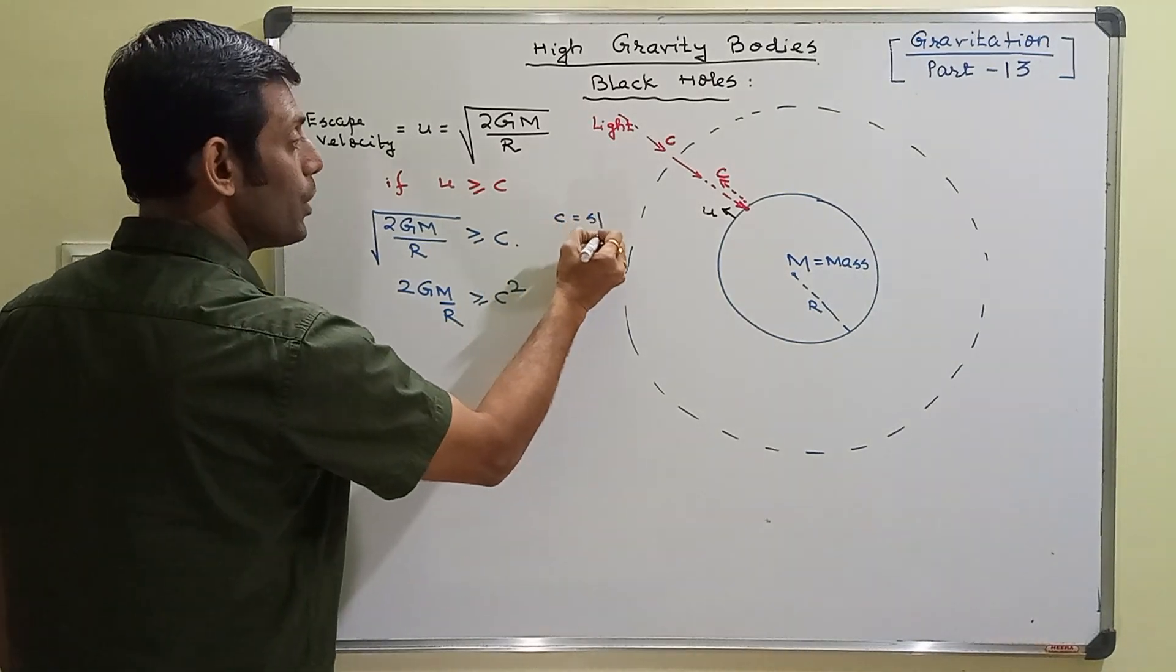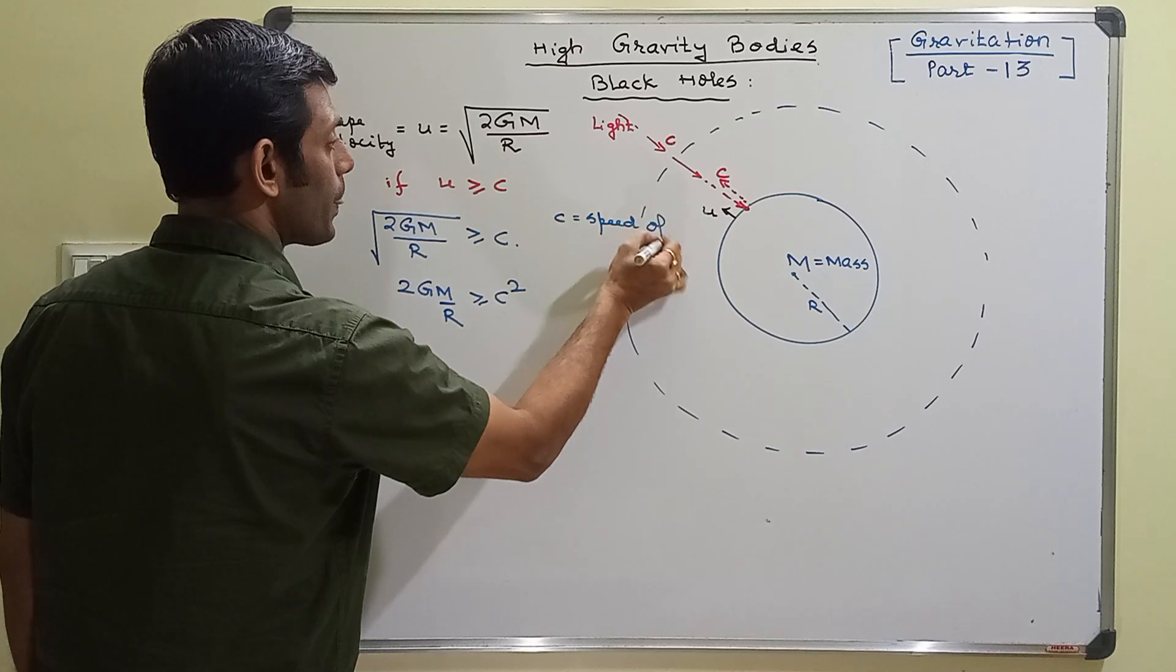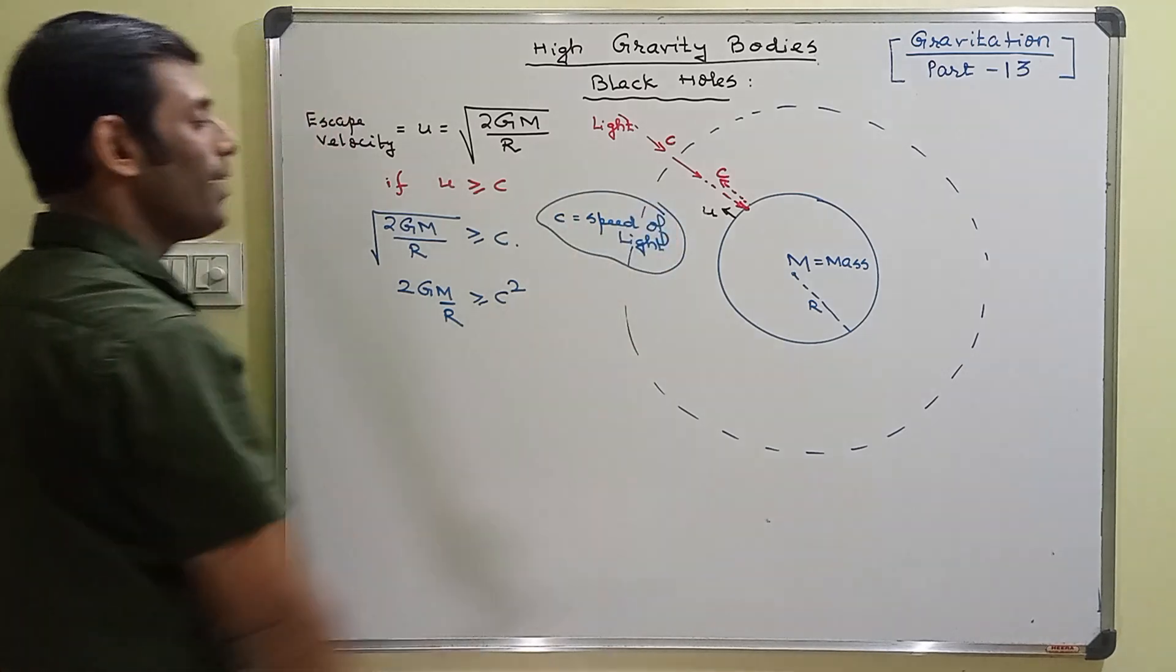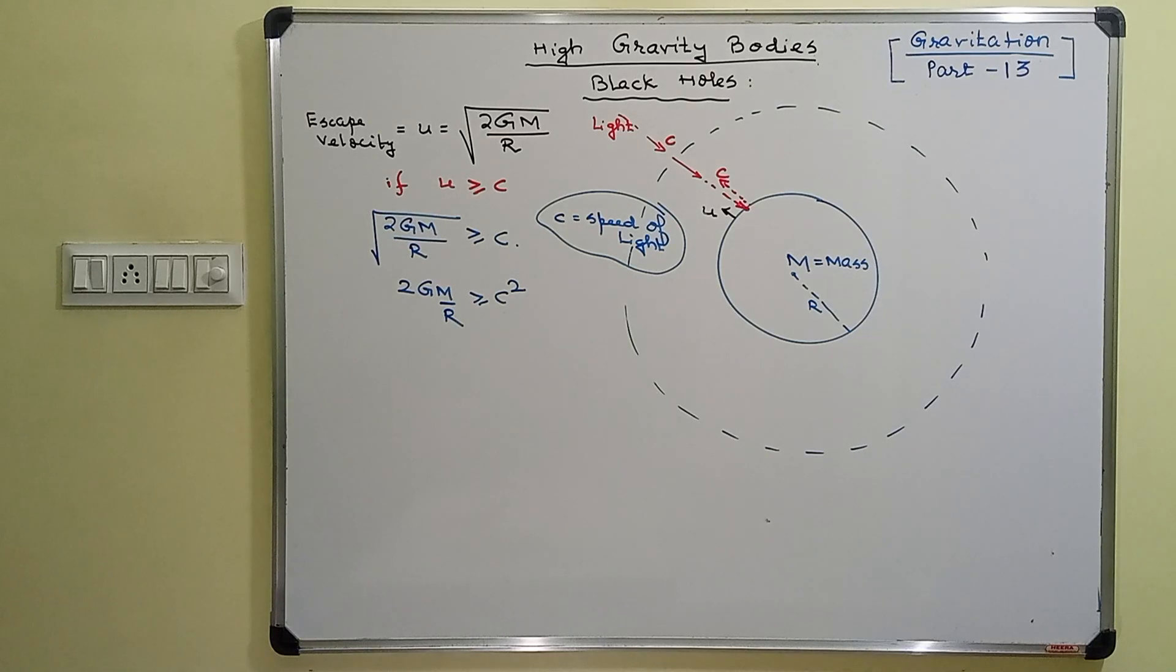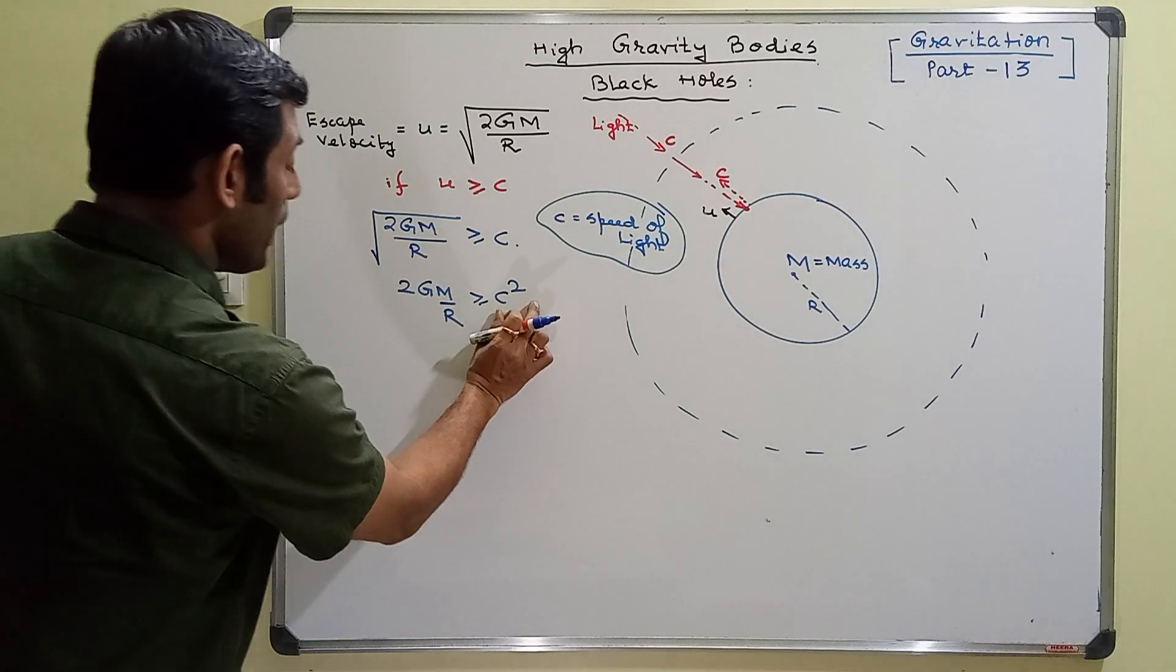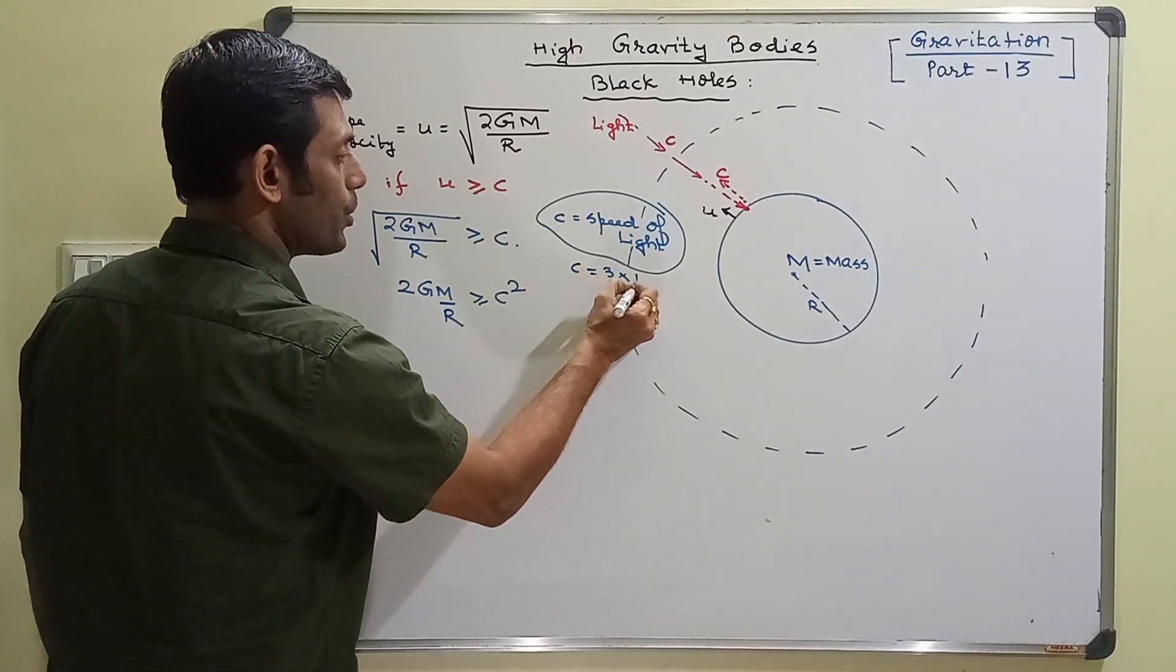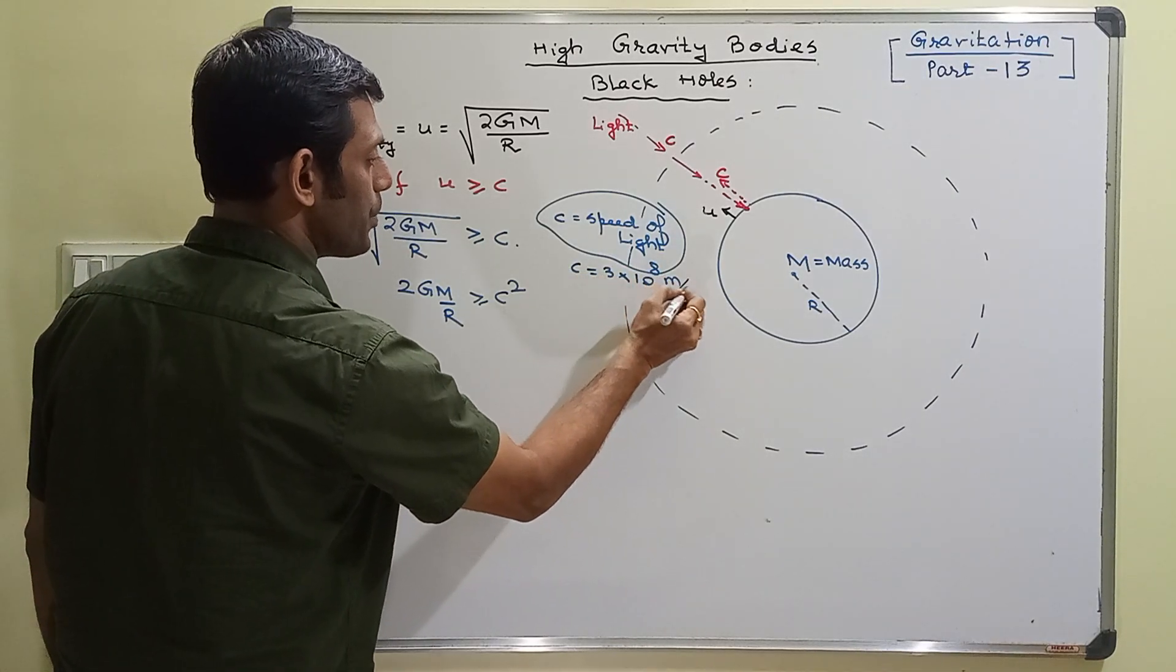Where this c equals the speed of light, a standard value of 3 times 10 to the power 8 meters per second. Now c square is a very large value, considering c as 3 times 10 to the power 8 meters per second.